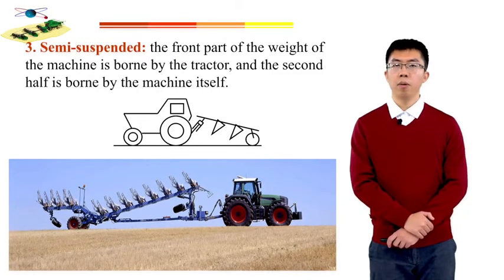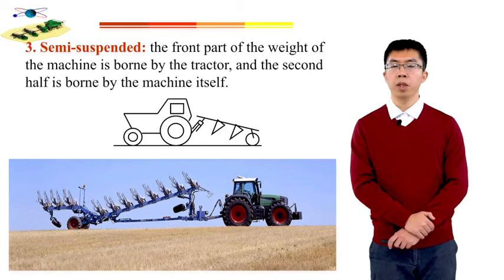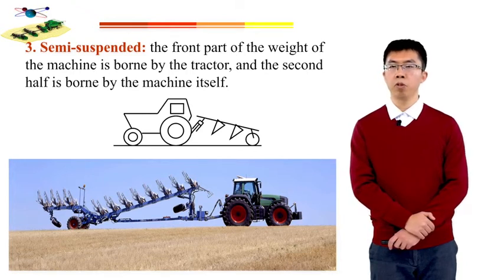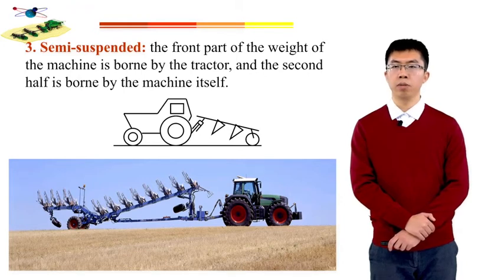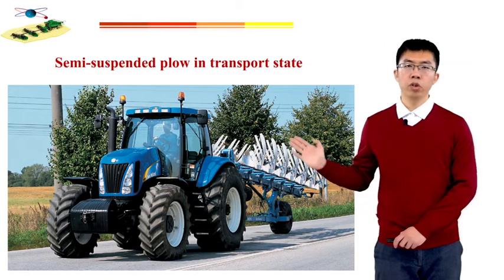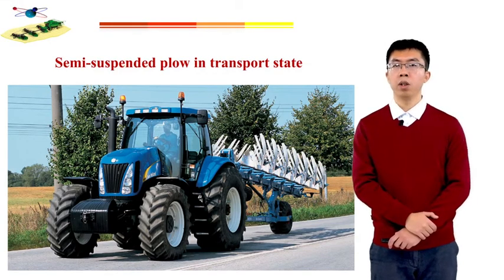The third type of moldboard plow is the semi-suspended. In this transportation state, the front part of the implement's weight is borne by the tractor, but the rear half is borne by the implement itself. This picture shows a semi-suspended plow in a transported state.